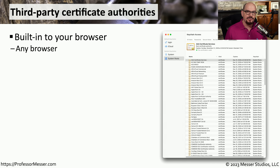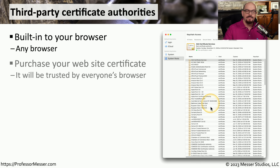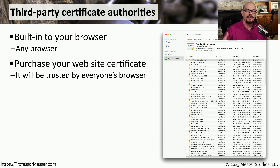This process that a browser uses to trust a website is built into the internals of the browser. If you look at the list of certificate authorities that are trusted by your browser, you will see there are hundreds of certificate authorities listed. This means a website can purchase a certificate from any of these hundreds of certificate authorities, put that digitally signed certificate on their web server, and as long as they're in the list in your browser, they'll be trusted.